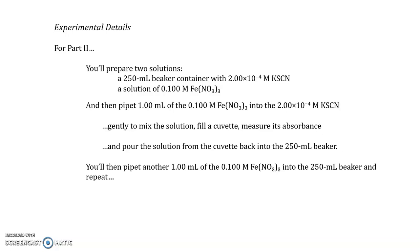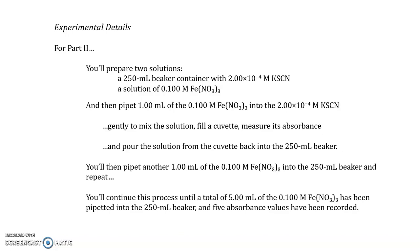You'll then pipet another 1 milliliter aliquot of the 0.1 molar iron(III) nitrate into the beaker and repeat the process of swirling, filling the cuvette, measuring its absorbance, and pouring it back into the beaker. This process will be repeated until you've added a total of 5 milliliters of the 0.1 molar iron(III) nitrate into the 250-milliliter beaker, and a total of 5 absorbance measurements have been recorded.